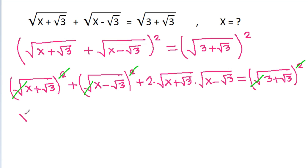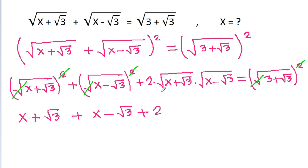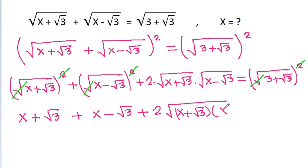So we will get x minus square root of 3 minus (x minus square root of 3) minus 2 times — and since square root of a times square root of b equals square root of ab — this will be equal to square root of (x minus square root of 3) times (x minus square root of 3), which equals 3 minus square root of 3.